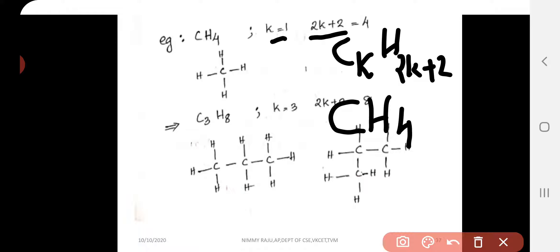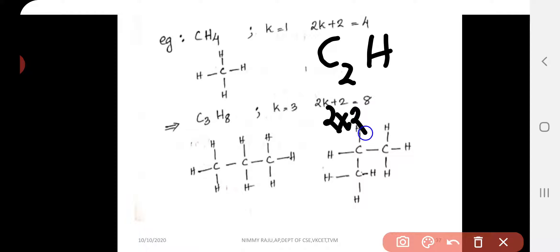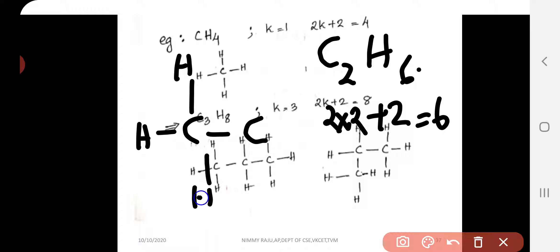For k=1, one carbon atom keeps single bonds to 4 hydrogen atoms, giving CH₄. When k=2, the number of hydrogen atoms is 2(2)+2 = 6, giving C₂H₆.